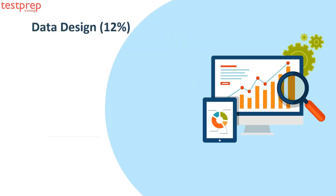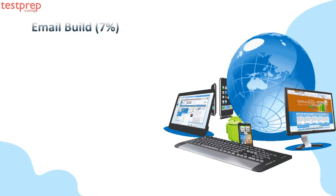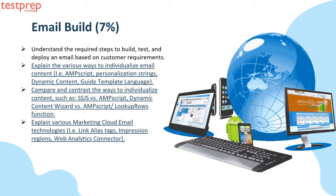Number five: Data Design. It contains — first, explain the various data objects in Marketing Cloud, such as data extensions, list model, data retention model, publication lists, and suppression lists. Second, understand available data types, retention, and template options when building a data extension. Third, understand how data is retrieved within a relational data model using basic SQL. Fourth, given a customer scenario, recommend the appropriate import method with lists or data extensions. Fifth, understand the implications of a system being the database of record.